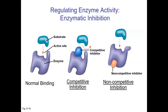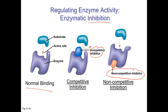One way enzymes can be regulated is inhibition — to stop or prevent something. There are different types of inhibitors. On the left: an enzyme being bound by its substrate normally can be blocked by a competitive inhibitor that occupies the active site and blocks the substrate. There is also non-competitive inhibition, where the inhibitor binds to a different part of the molecule and prevents the substrate from binding to the active site.